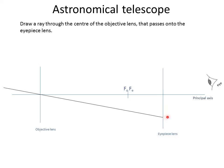When it gets to the eyepiece lens, it will bend and be brought towards a focus somewhere towards the principal axis. But because it's not parallel to the axis, we don't know exactly where it will form yet.